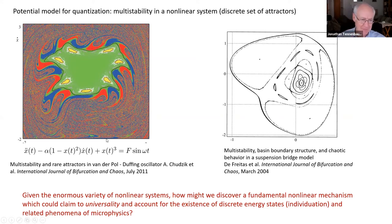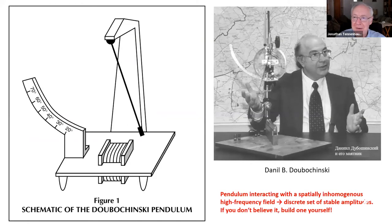So there are a lot of systems like this. Now, the question is, if we want to take that as a starting point, multi-stability as a starting point for thinking about quantization, well, there are a lot of these systems. So we would want to somehow narrow things down to find something really that we could call fundamental or universal. So this is where the Doubochinsky pendulum comes in as a kind of paradigm, as a very simple example of a classical system, a system that is easy to build, which displays quantization in the sense that I stated.